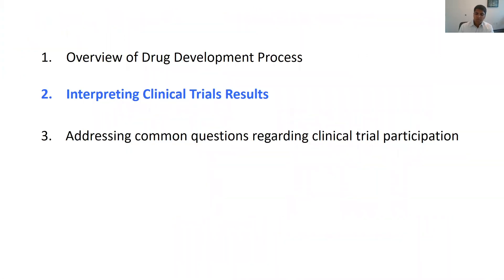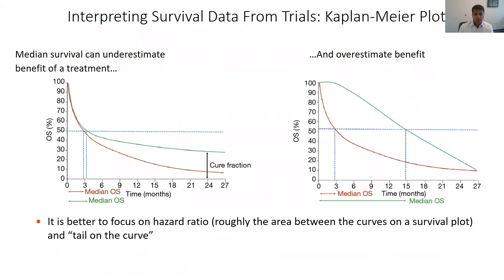I want to spend a minute discussing interpretation of survival results among clinical trials, as this is often a pertinent topic for discussion. We all — including those of us who conduct the clinical research — have a tendency to focus too much on the median or average survival estimates of a particular treatment. In fact, it is actually important to look at the actual survival curves, what we call Kaplan-Meier curves, which estimate the probability of a treatment outcome starting from when a patient enrolls on the trial.